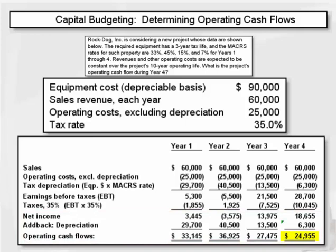This problem wanted you to determine what was the operating cash flow in year four, and that's highlighted on the screen. It's $24,955.